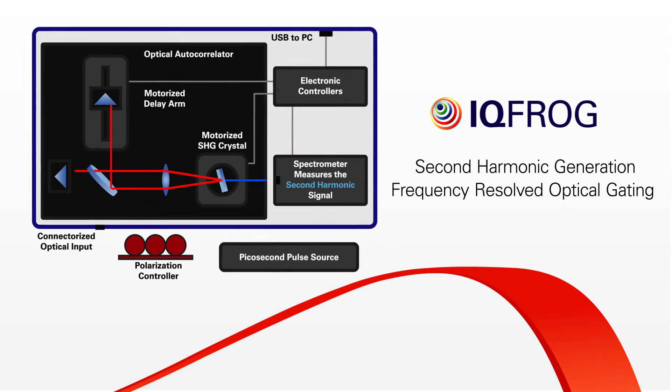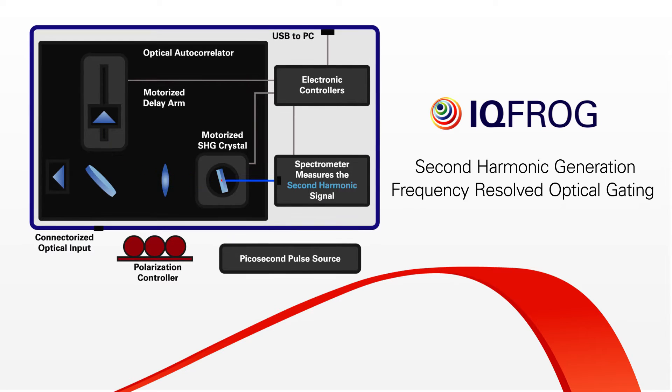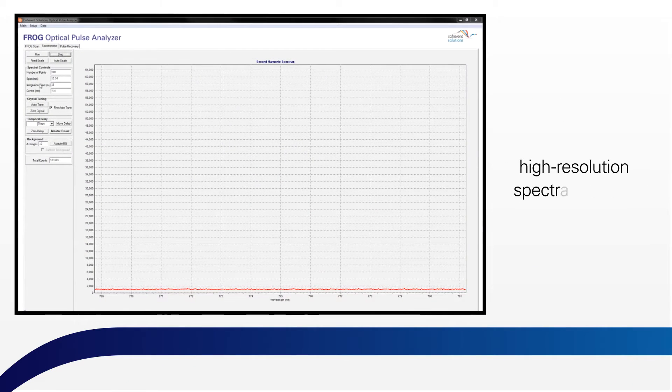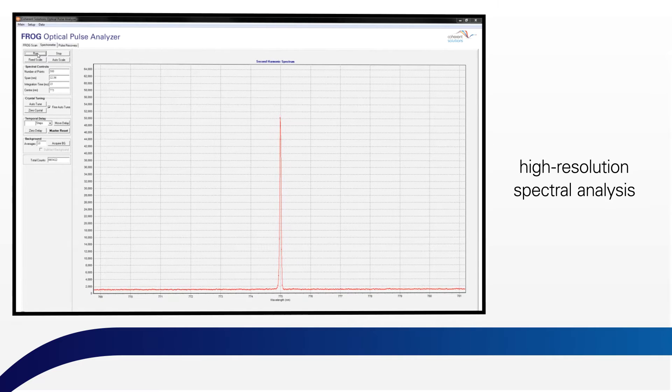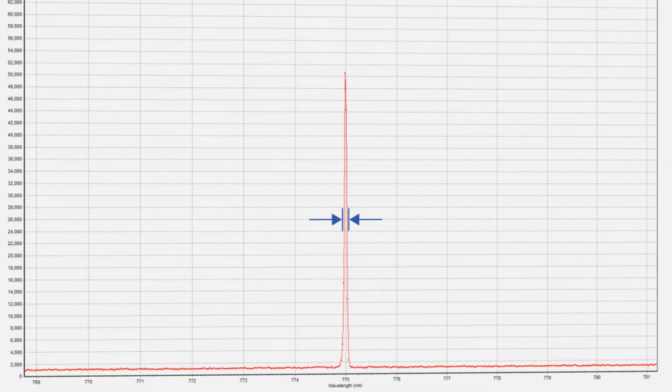IQ Frog is a second harmonic generation frequency resolved optical gating pulse analyzer. It provides high resolution spectral analysis to enable accurate measurement of pulses with full width at half maximum as narrow as 0.2 nanometers.